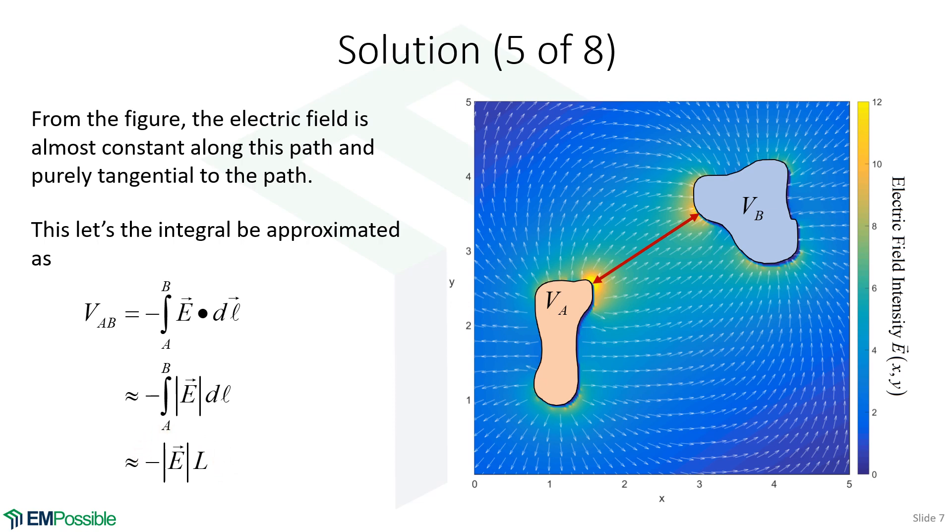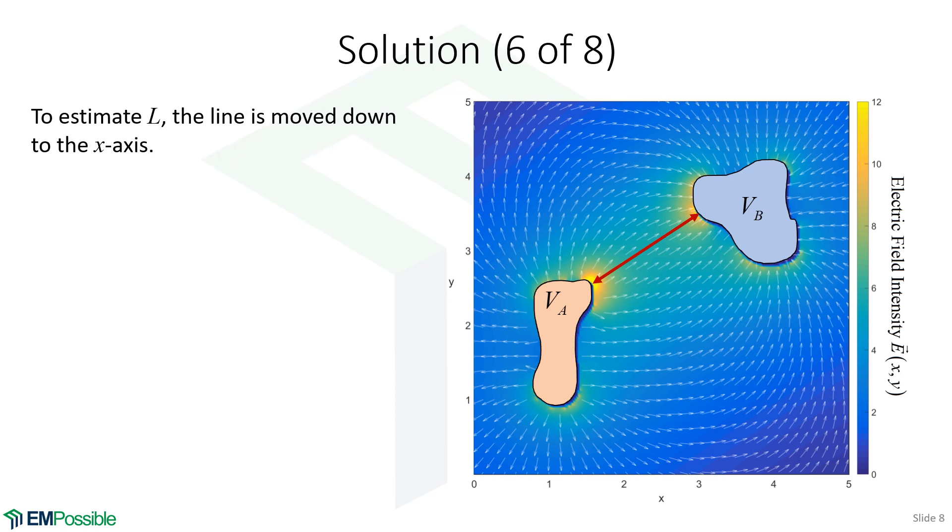And of course, there's this negative sign here to keep our sign convention, which says the electric field will start at a higher potential and point towards the lower potential.